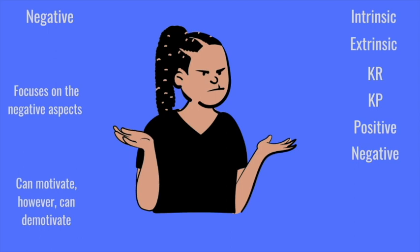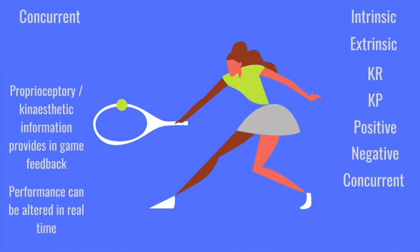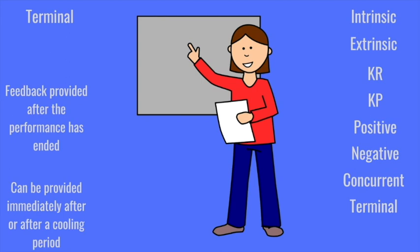Concurrent feedback is feedback that can be used and altered in real-time during performance. Proprioceptory/kinesthetic information provides in-game feedback — a performer can get instant feedback from a bad tennis or golf shot and correct it within the game itself. A coach may also provide concurrent feedback during a match where the sport allows it. Terminal feedback is provided after the performance is finished — either immediately after or after a cooling-off period — and is something to be considered for the next performance, not the current one.